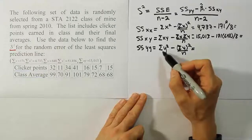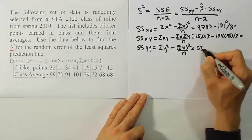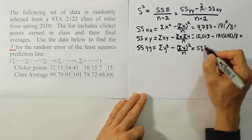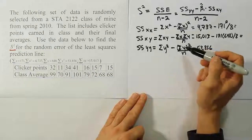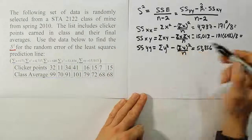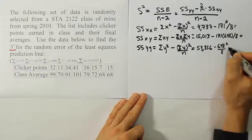Then for this one we'll have the sum of Y squared. That's going to be 53,856, minus the sum of Y quantity squared. That's 648 squared over N which is 8.